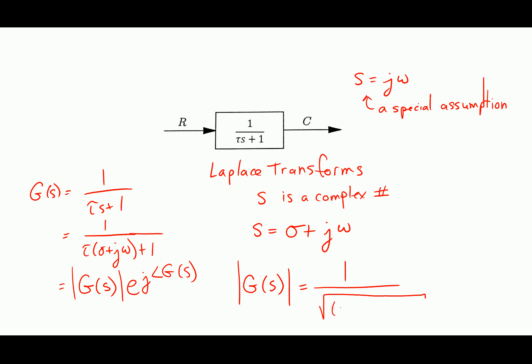So G of S equals 1 over (tau*S plus 1) really means 1 over (tau times (sigma plus j*omega) plus 1). This is a complicated function that has a magnitude and an angle. The magnitude of G of S involves a real part squared plus (tau*omega) squared in the denominator. This magnitude is a three-dimensional function — a function of both the real part sigma and the imaginary part omega of S. I can graph this over a range of sigma and omega, with magnitude in the third dimension.